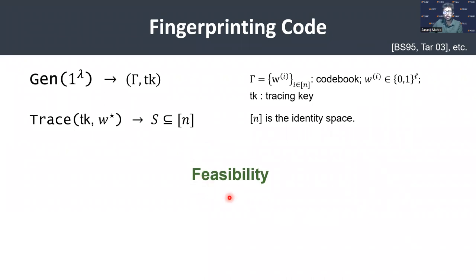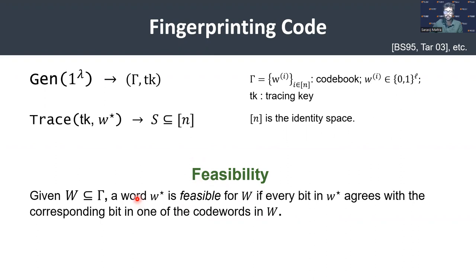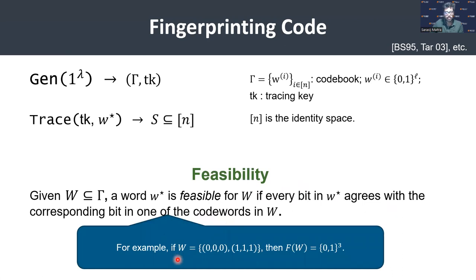We also require the notion of feasibility to understand the security of the fingerprinting code. Suppose we are given a subset W of gamma (the codebook). A word W* is feasible for the set W — denoted F(W) — if every bit in W* agrees with the corresponding bit in at least one of the codewords in W. For example, if W consists of two elements, 0,0,0 and 1,1,1, then the feasible set consists of all of {0,1}^3, because each bit of any element can be matched with one of those codewords.